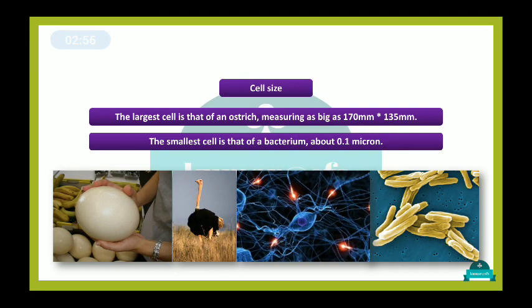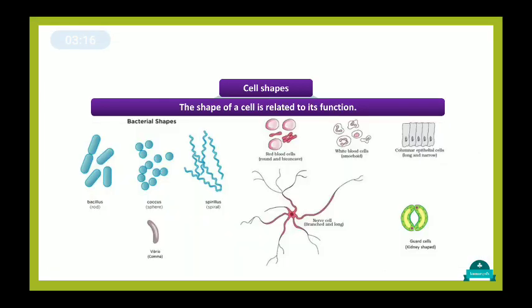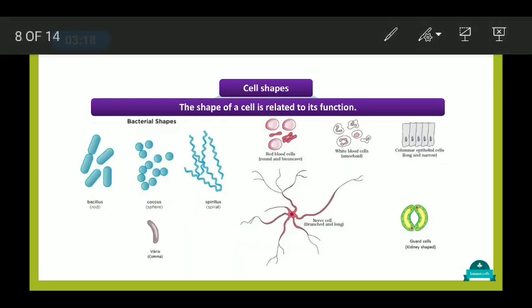We also looked at cell size. Cell size can differ from 0.1 micron to 170 mm. The ostrich egg is the biggest cell and the bacterium cell is the smallest cell. Then we looked at cell shape.